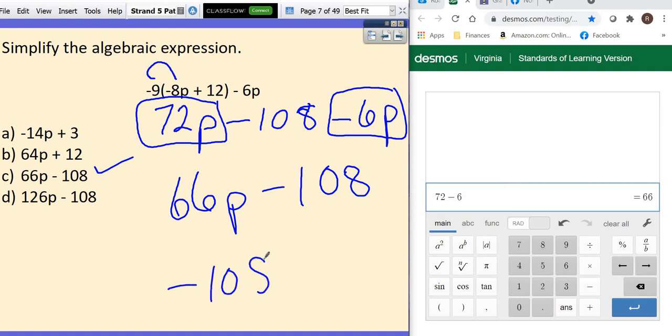But it can also look like this. Negative 108 plus 66p. Either one of those is correct. So make sure to keep your eye out for that.